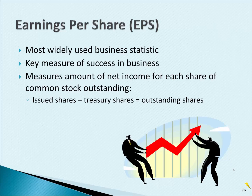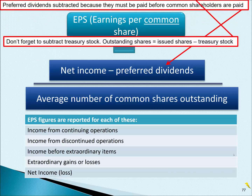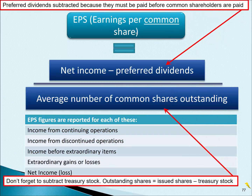Let's look at the formula. EPS — Earnings Per Common Share — equals net income minus preferred dividend, divided by the average number of common shares outstanding. Remember, this is for common shares, which do not receive the preferred dividend, which is why we subtract it. To calculate the average number of common shares, it's the beginning number of common shares outstanding plus the ending amount of common shares outstanding, divided by 2. Outstanding stock does not include treasury stock, so don't forget to subtract that.